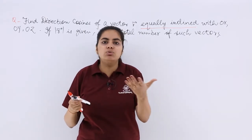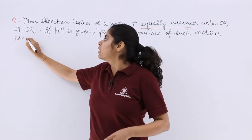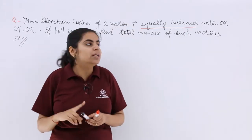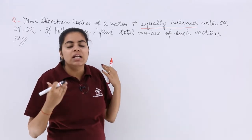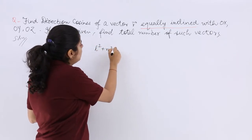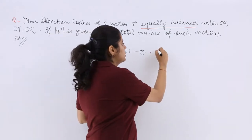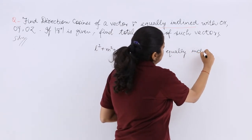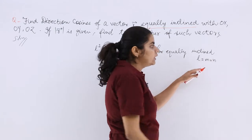The total number of vectors I have to find out will be a number — 1, 2, 3, 4 and so on. But for that number, you will also have to solve pertaining to the information given. So I have been given that I have equally inclined vectors with OX, OY, OZ. For equally inclined vectors, L, M, N definitely should be equal.